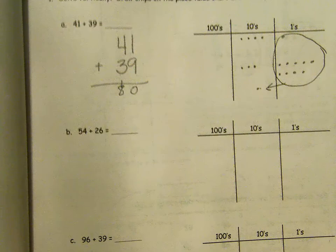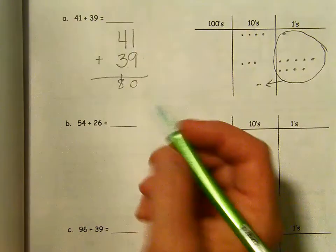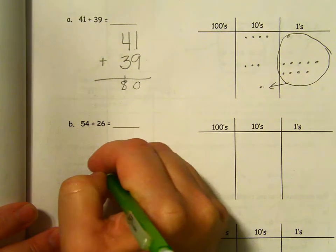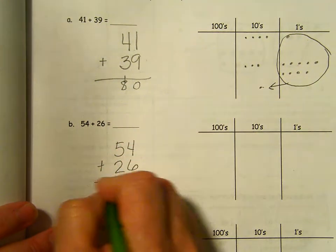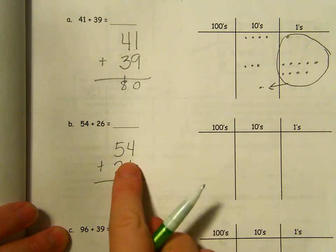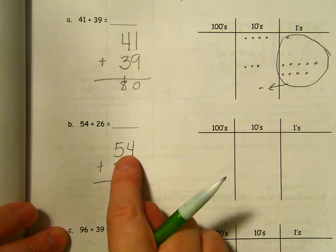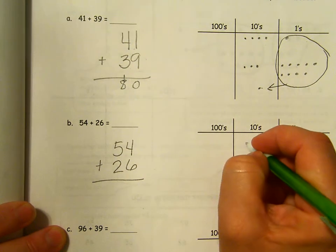Let's do the next one. 54 plus 26. Start off writing it vertically. 54, 26. Everything's lined up and I'm going to show my two numbers.